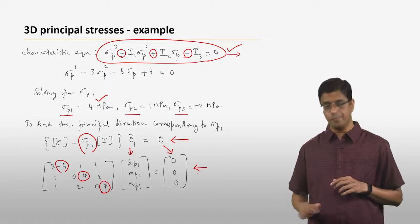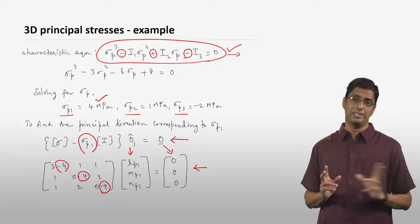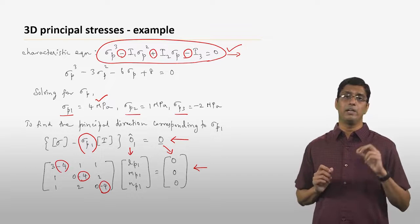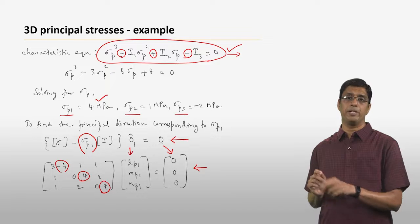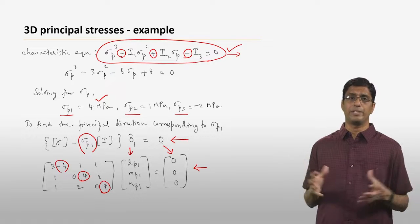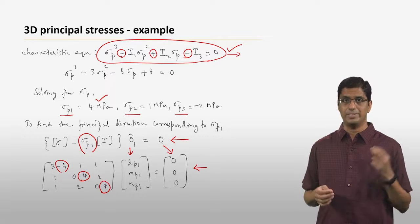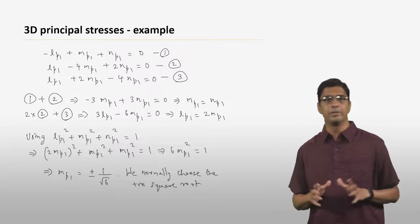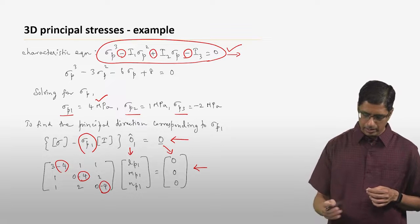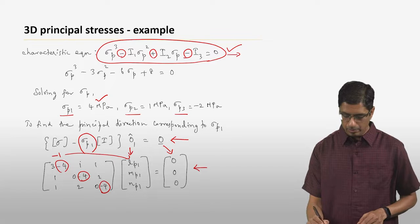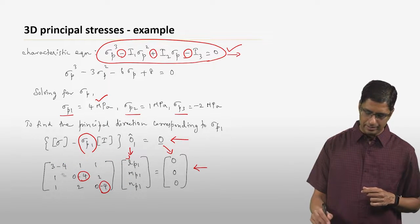You have this set of equations, but recall that these three equations are not independent — only two of them are independent; the third is a dependent equation. So you cannot explicitly solve for lp1, mp1, and np1 using only these three equations. You have to use the fact that the square root of lp1² plus mp1² plus np1² equals 1, because lp1, mp1, and np1 are the direction cosines of a unit vector with magnitude 1. So first, you get these three equations from the system.